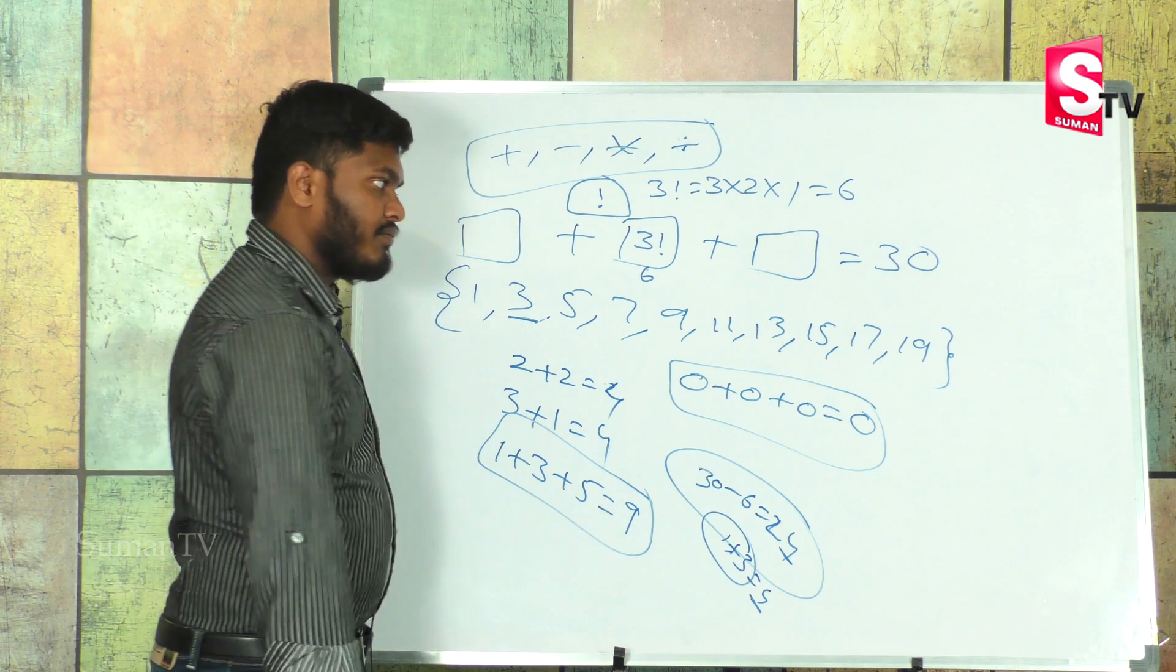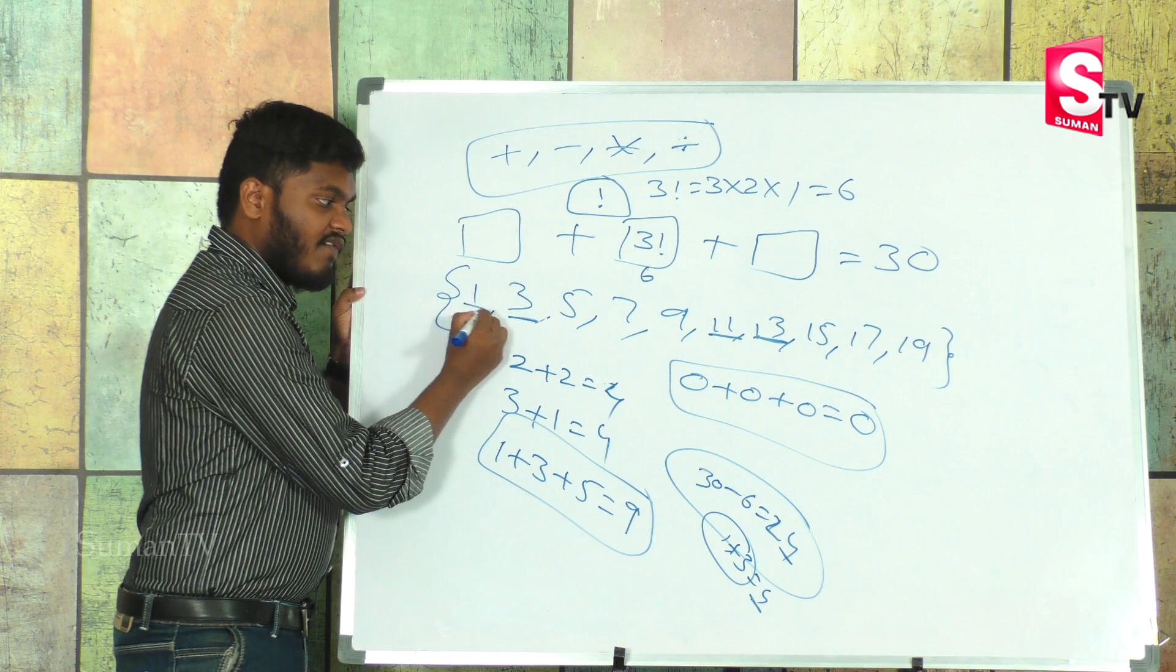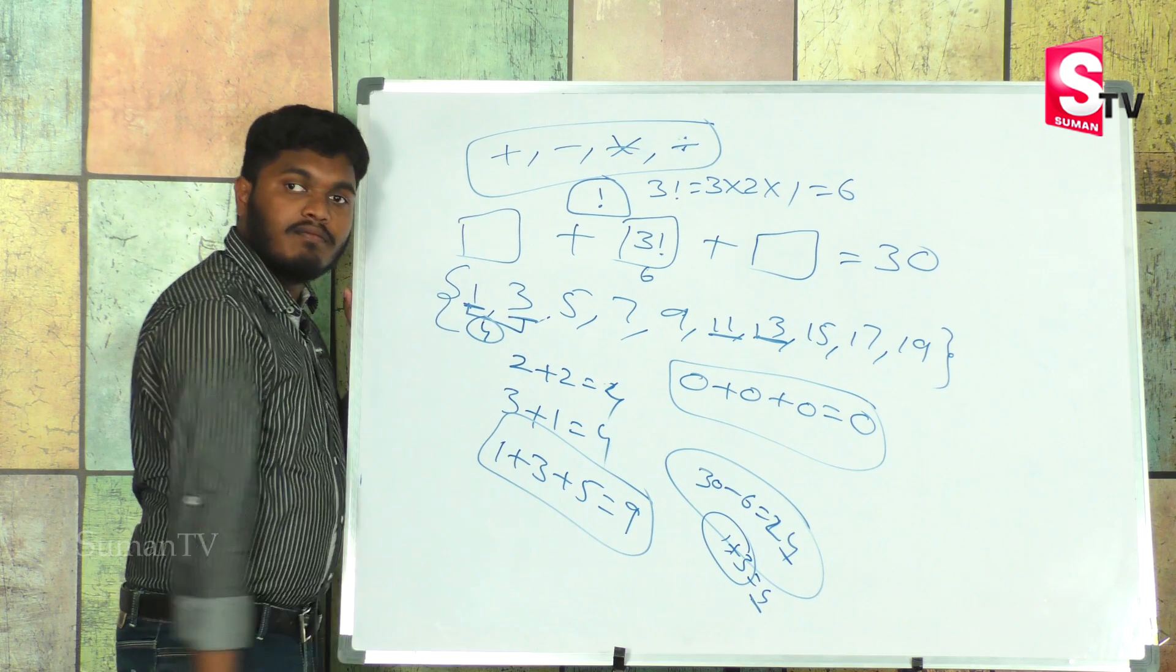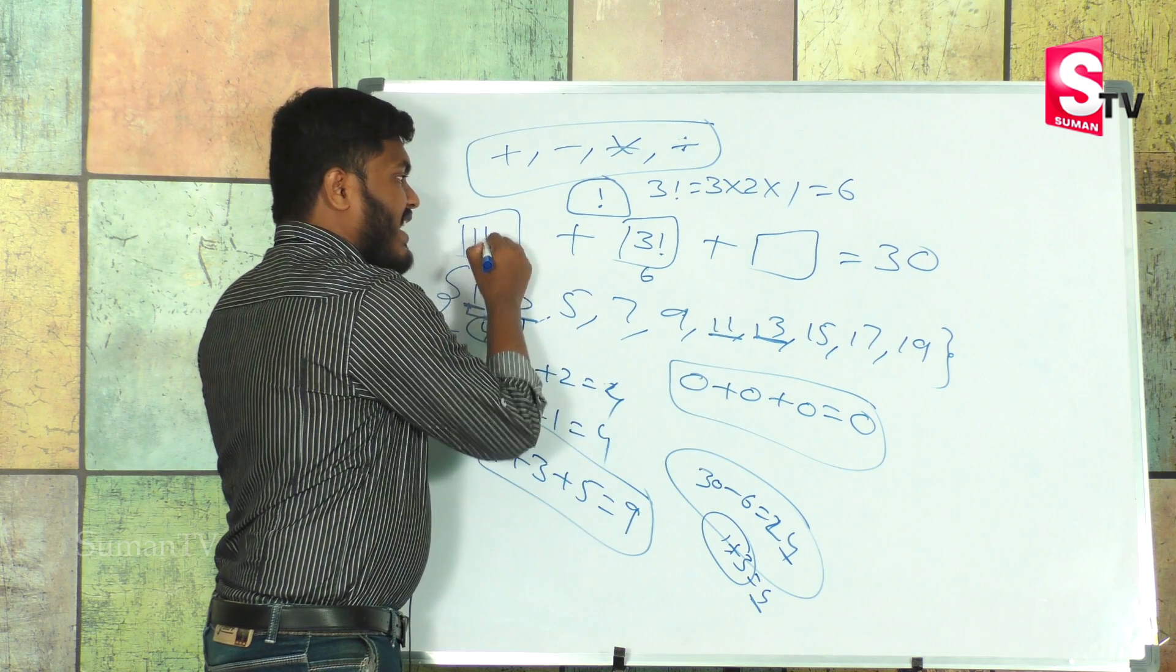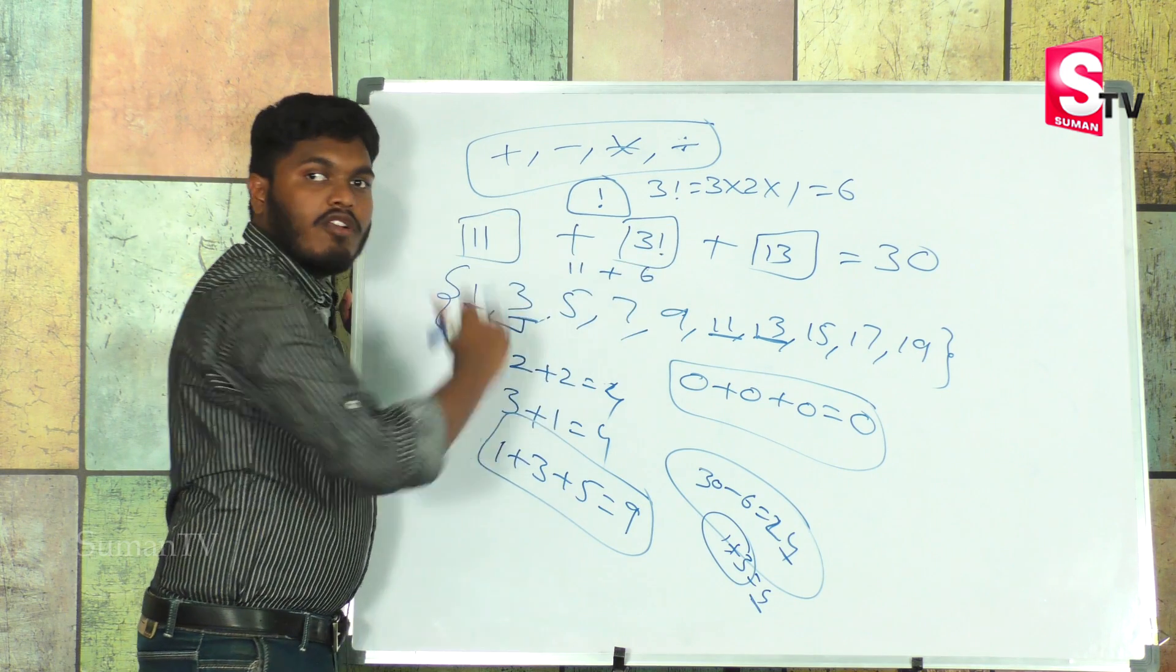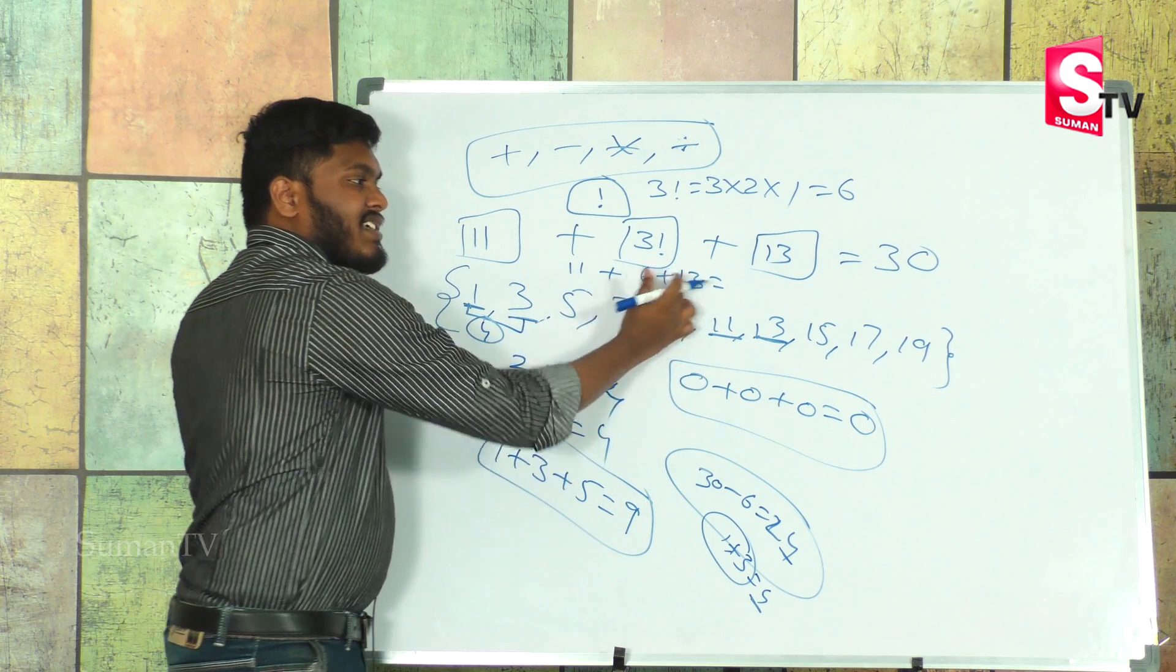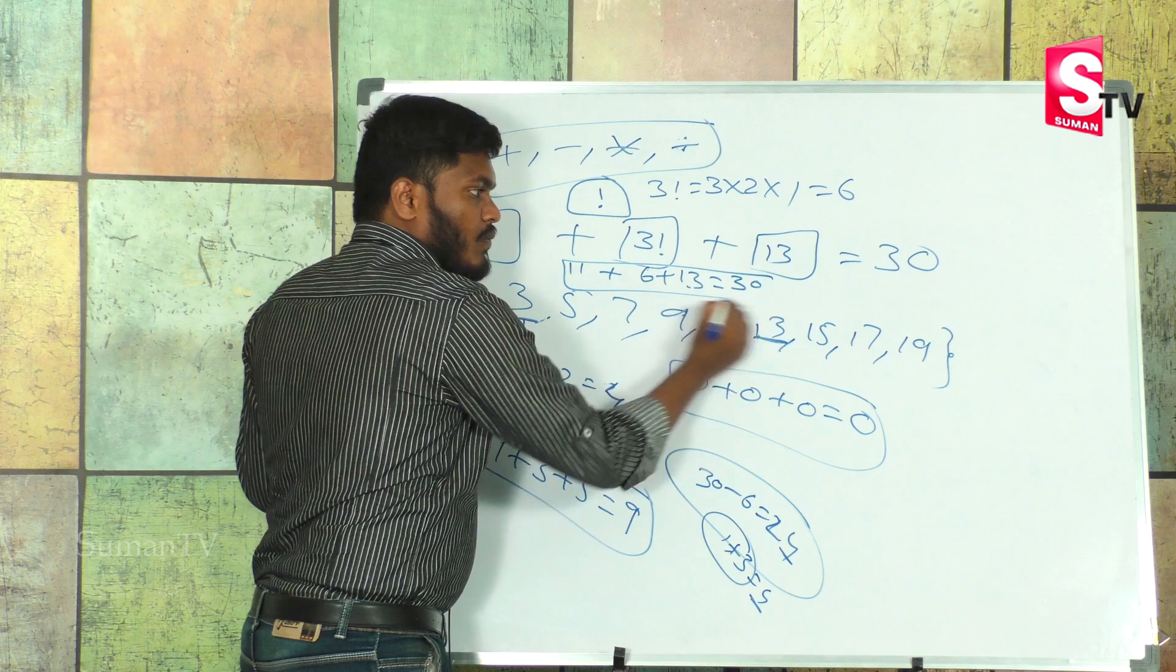Using the unit digit concept: 11 plus 3 factorial plus 13. That's 11 plus 6 plus 13, which equals 30. This is our answer.